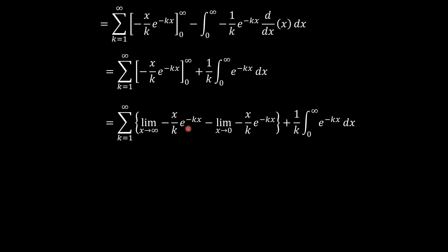L'Hôpital's rule investigates whether the numerator or denominator increases faster. Here the denominator increases at a faster rate, so the fraction tends to 0. The lower limit term, where x tends to 0, gives e to the power negative k times 0 which tends to 1 and x tends to 0, so that part also goes to 0. We are left with just the second term: 1 over k times the integral from 0 to infinity of e to the power negative kx.